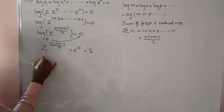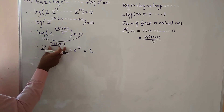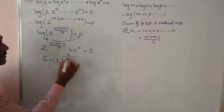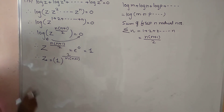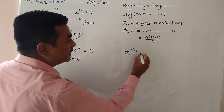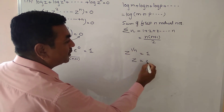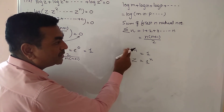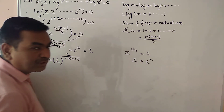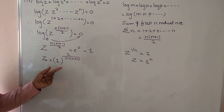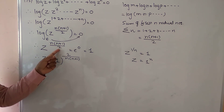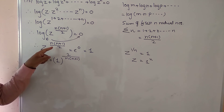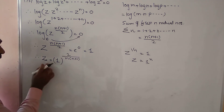Since z^(n(n+1)/2) = 1, taking the reciprocal power: z = 1^(2/(n(n+1))). This means z is one of the roots of unity. To express in general polar form, we write 1 = cos(2nπ) + i·sin(2nπ), converting to the general polar form by adding 2nπ.